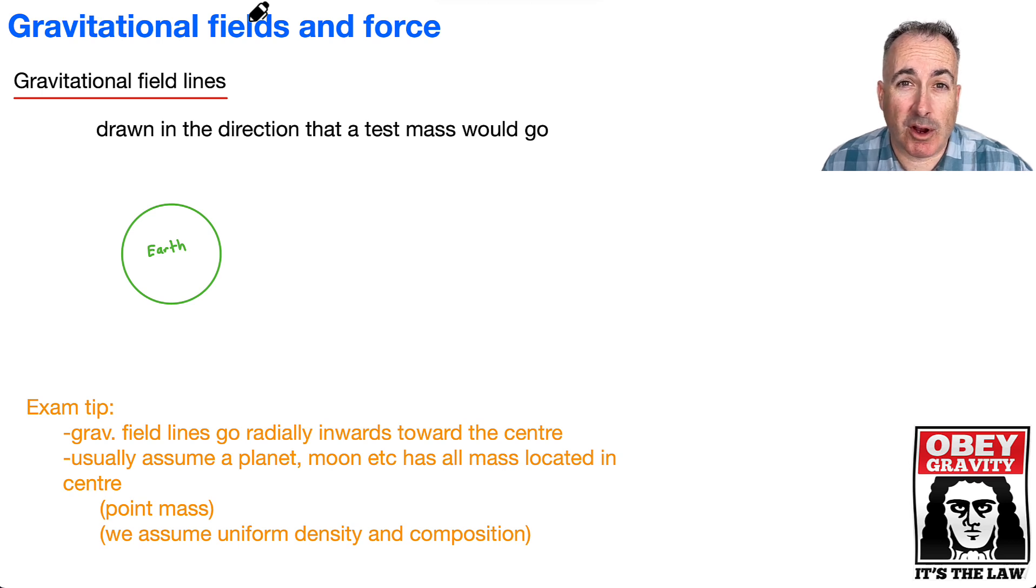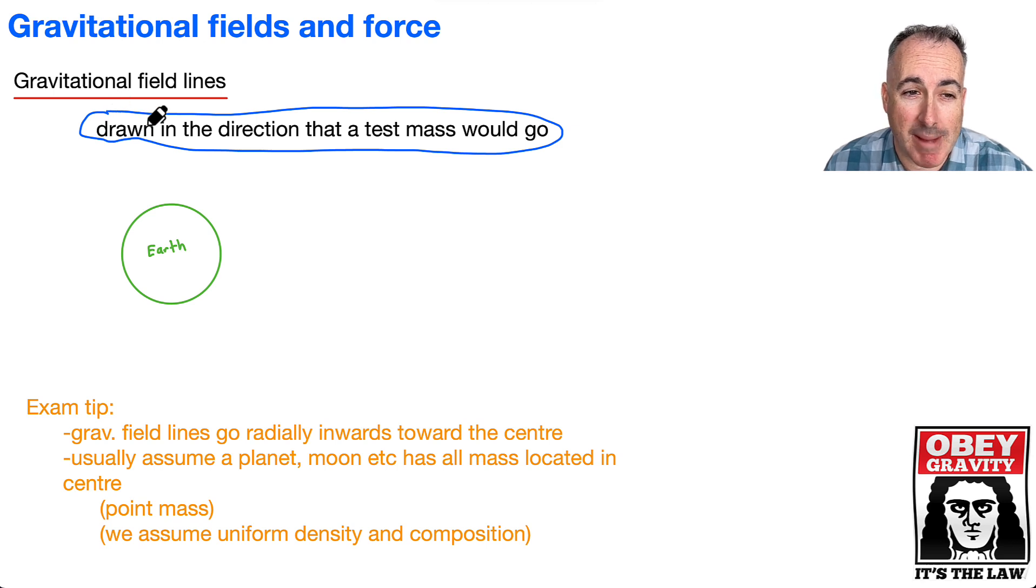First, I think it helps to learn about gravitational field lines. These are artificial lines that we invent, and we draw them in the direction that a test mass would go.